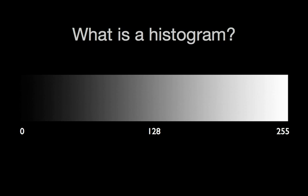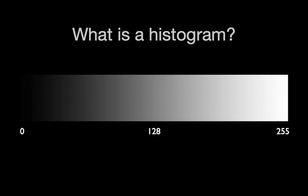What researchers discovered was to recreate a continuous tone black and white image, 255 different shades of gray were needed to fool the eye into thinking there was in fact an infinite number of shades of gray in the image.